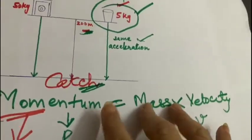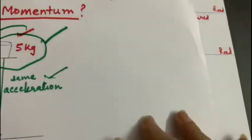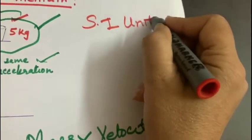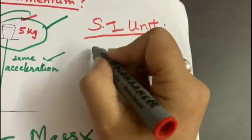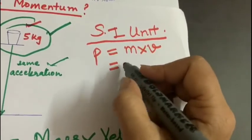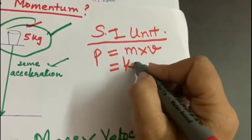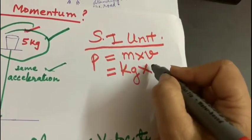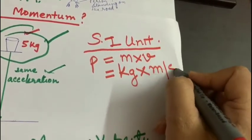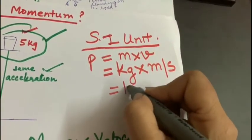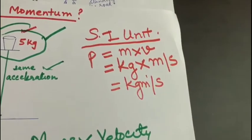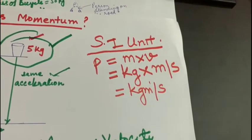Now let's calculate the SI unit of momentum. We will first write the formula P equals M into V. You know the SI unit of mass is kg, and multiply by velocity. The SI unit of velocity is meter per second. So the SI unit of momentum will be kg meter per second.